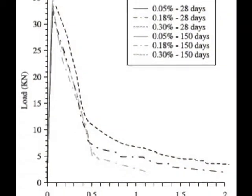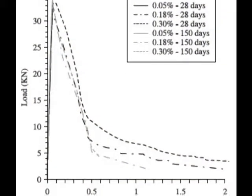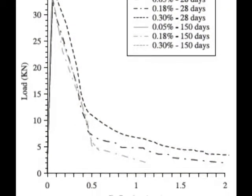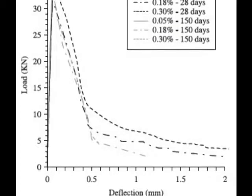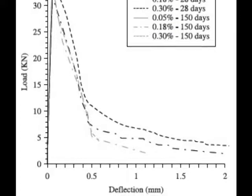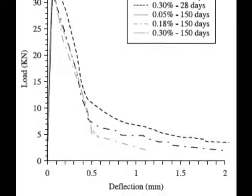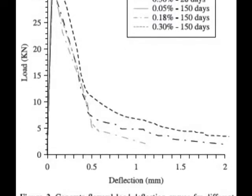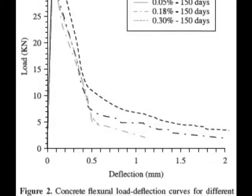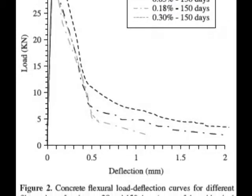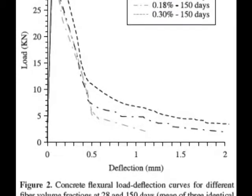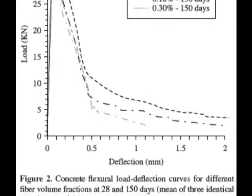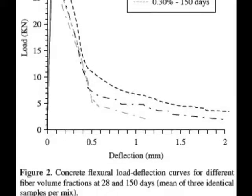For all of the good that these fibers do in the concrete mixture, they do not increase the flexural strength of the concrete, and so they cannot replace moment-resisting or structural steel reinforcement. If the fiber content in the concrete mixture is too high, the fibers will actually compromise the strength of the concrete.